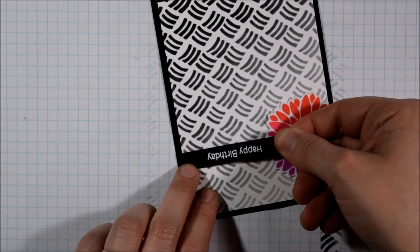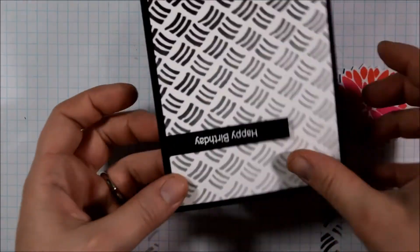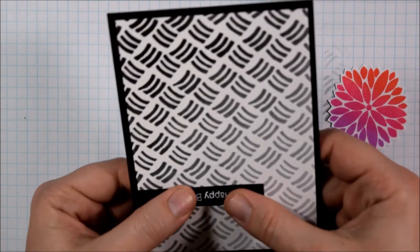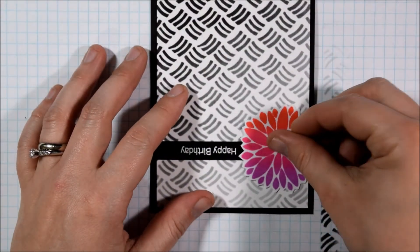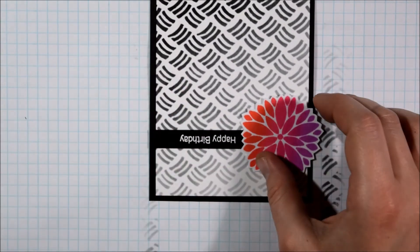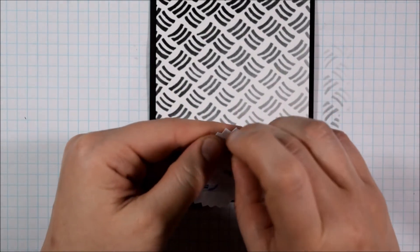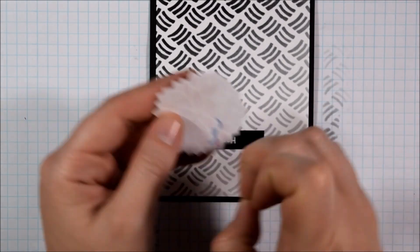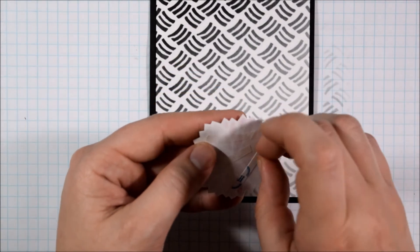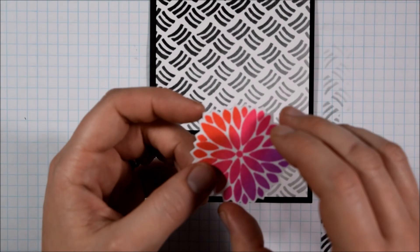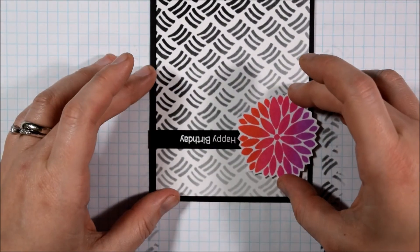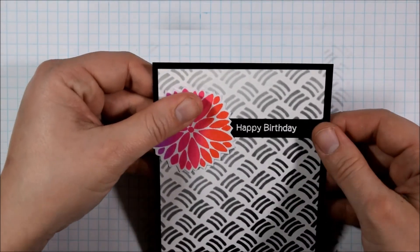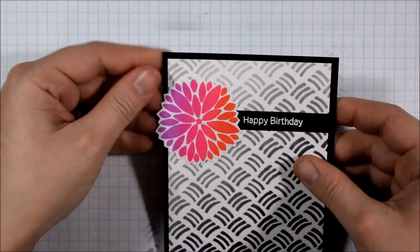Then I just fussy cut out the Fanciful Florals flower because I wanted there to basically rather than create a round look of the flower I wanted to bring out the shape of the petals so I went in and fussy cut in between all the different petals. You could of course cut it out round if you found that a little bit easier but I kind of liked how it created those sharp edges around it. And then I'm just going to tape this all down flat to the card and that is going to be it for my card today.